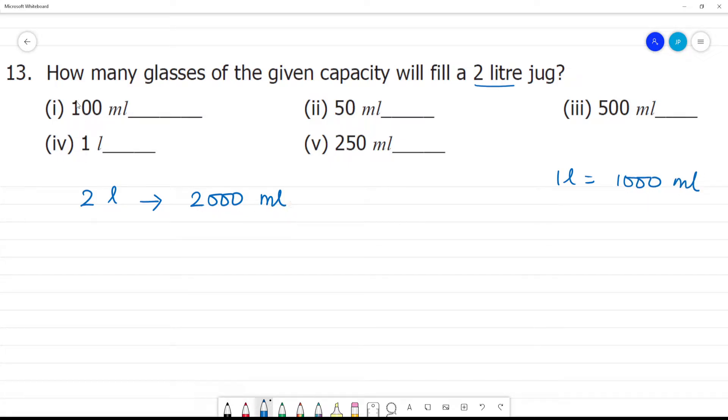Now we have a 100 ml jug. How many 100 ml in 2,000 ml? That is 2,000 ml divided by 100 ml. If you cancel the zeros, this is 20 glasses. 100 ml glasses, 20 glasses will fill the 2 liter jug.